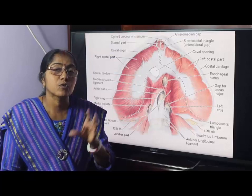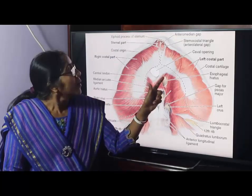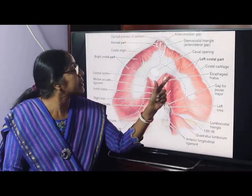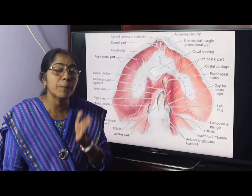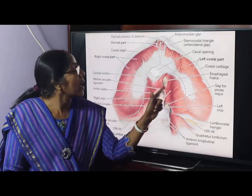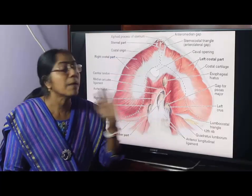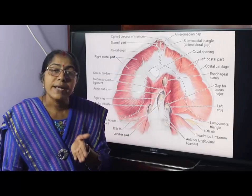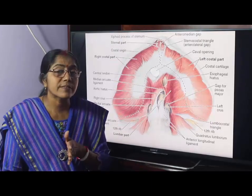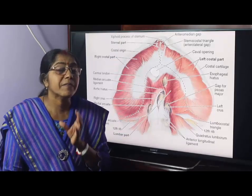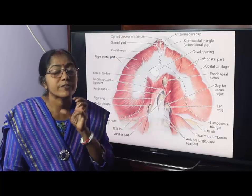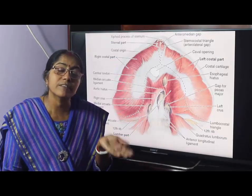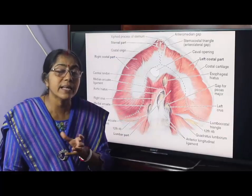The esophageal opening is located at the level of the tenth thoracic vertebra in the muscular part of the diaphragm — unlike the caval opening, which is in the tendinous part. Structures transmitted include the esophagus, anterior and posterior vagal trunks, and esophageal branches of the left gastric vessels. When the diaphragm contracts, this opening constricts, preventing regurgitation of food from the stomach into the esophagus, and ensuring inspiration and deglutition cannot occur simultaneously.